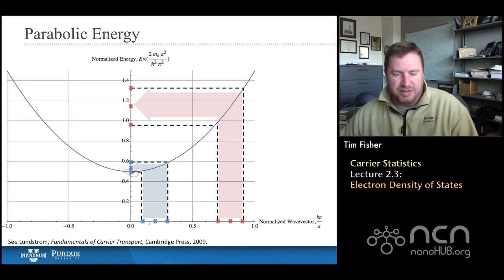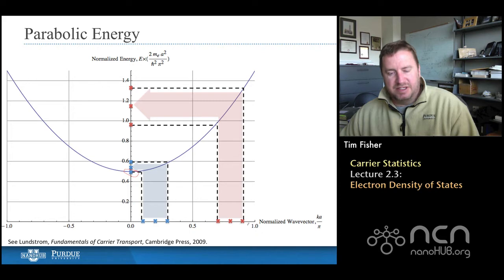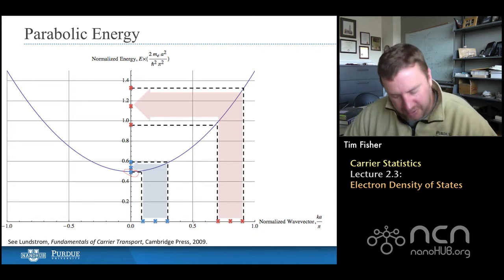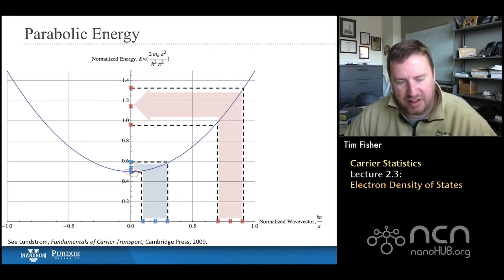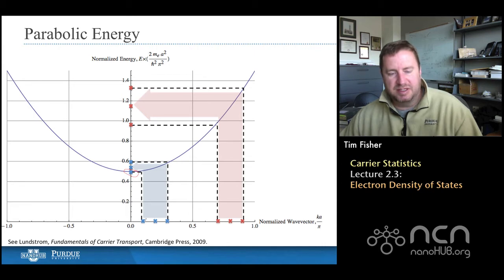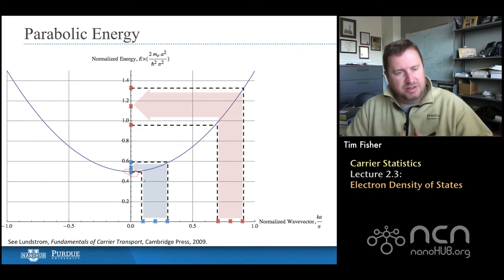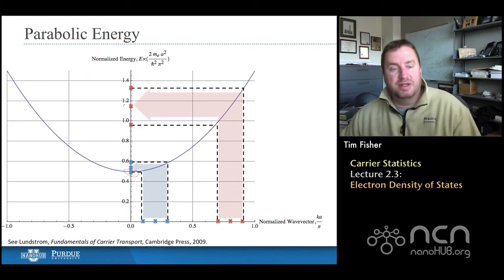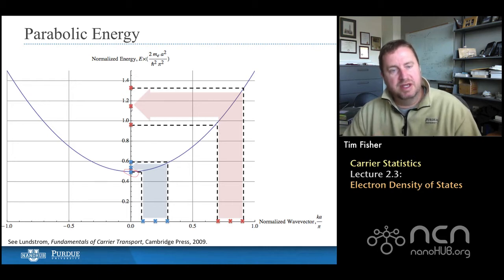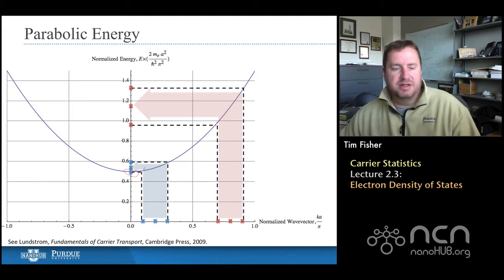But let's recall, first of all, that the wave vectors, the allowed states of wave vectors, have a regular order. Now, I didn't draw all the available wave vector states. But let's say that I had three that were separated by an equivalent distance in k space on the x-axis here. And again, this is a normalized wave vector. If I map those using this parabolic curve to energy space, you'll notice that in energy space, those three states are much more tightly spaced, relative to the states, the equivalent states, where I've made the same width of band in k space.